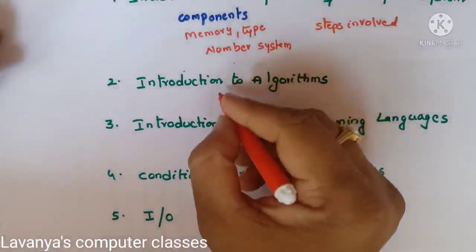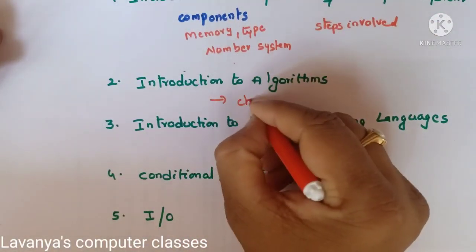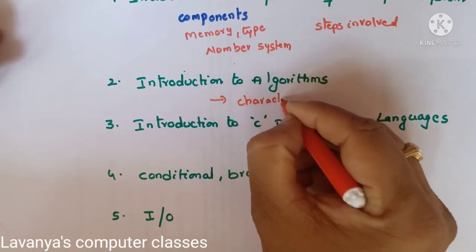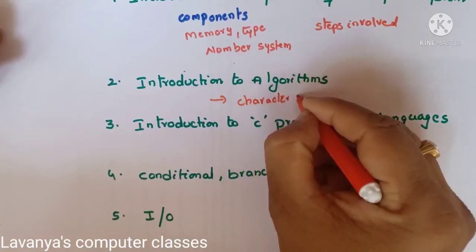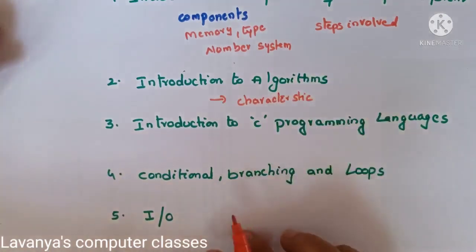Next, Introduction to Algorithm. What is an algorithm and what are the characteristics of an algorithm — that is a very important question. Just characteristics of algorithm.